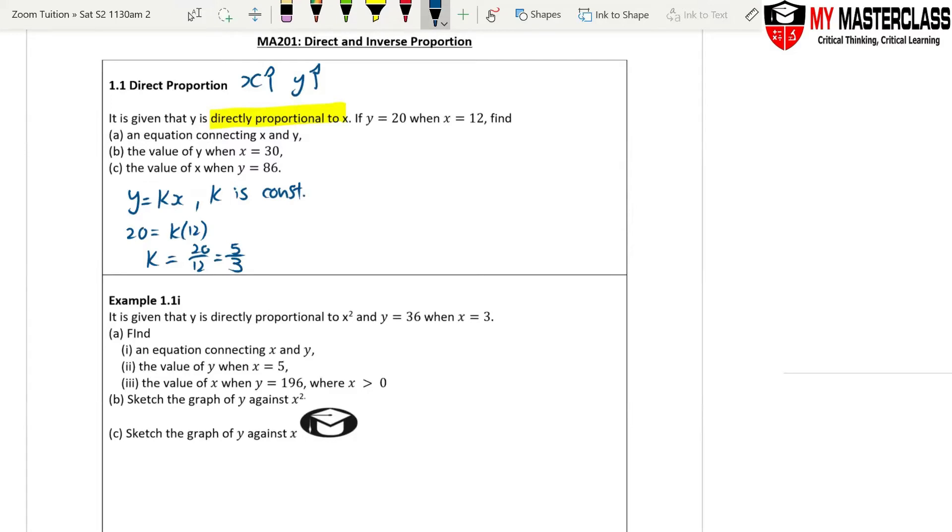But k is never your answer. Now we put back the k. So for part a, y equals 5 over 3x, because my k is 5 over 3. So this is the equation connecting x and y.